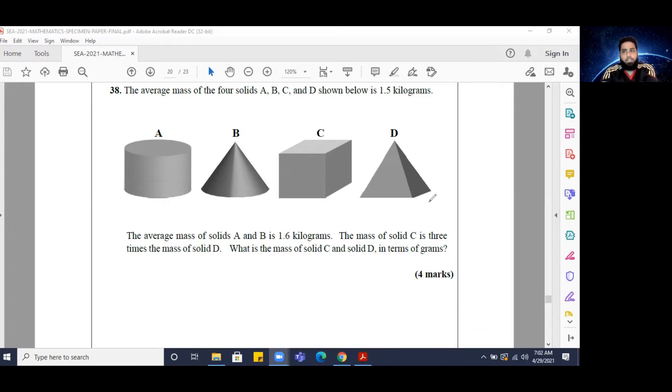So if I want to get the combined mass of all four solids, I'm going to have to multiply 1.5, which is the mean, by four to get the combined weight of all four solids. And 1.5 multiplied by four is going to give me 6.0 kilograms.